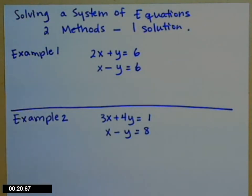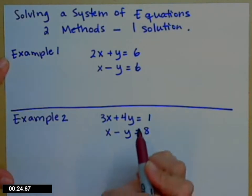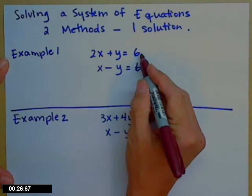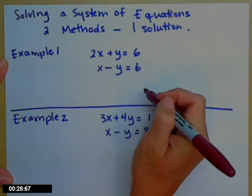The first method is either called an addition method or sometimes it's called an elimination method. What you want to do is add two equations so that one of the letters goes away.